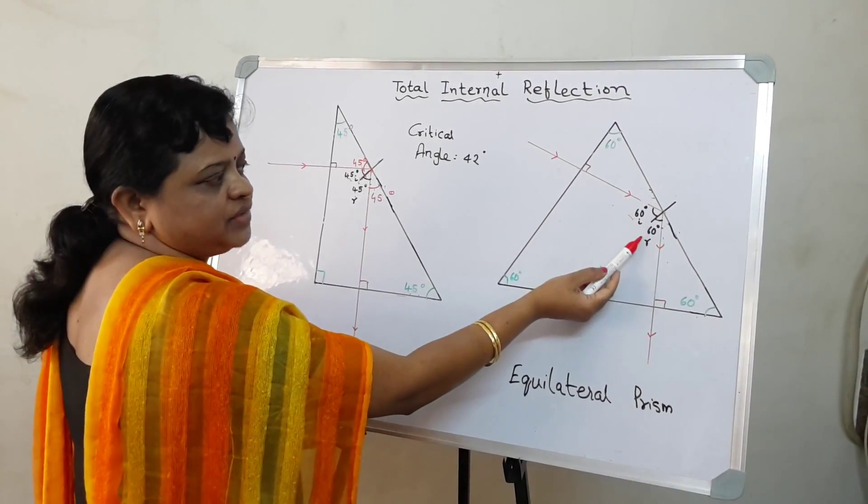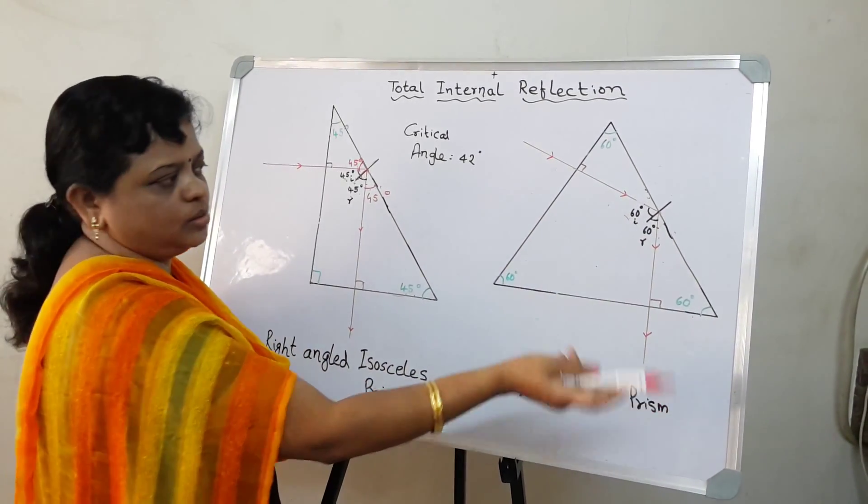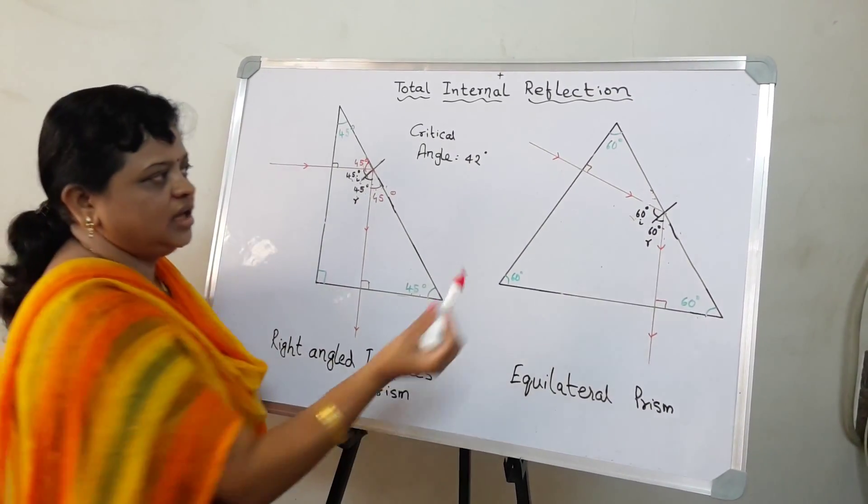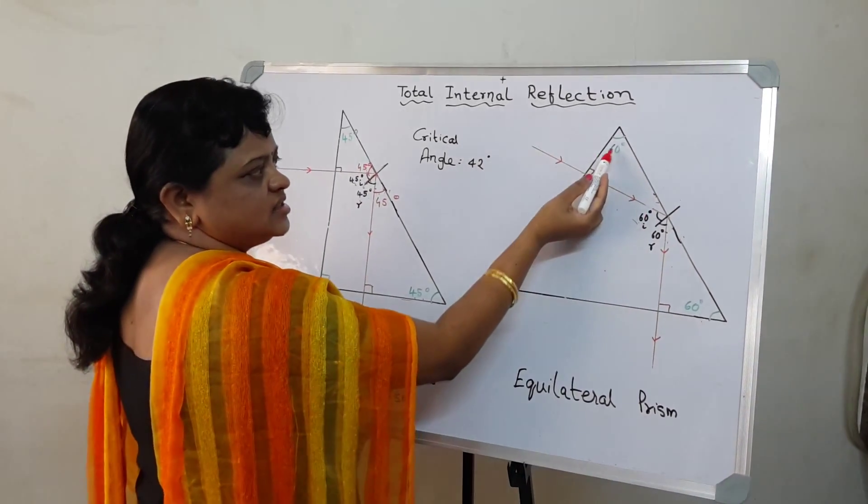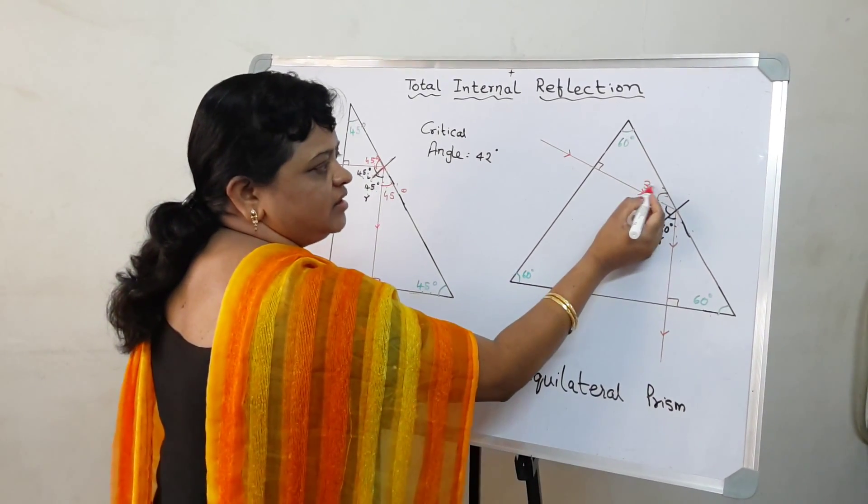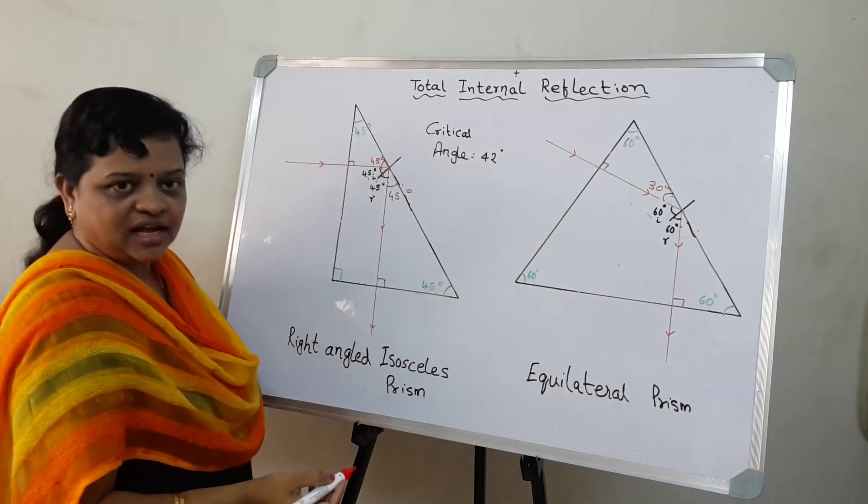60 is angle of incidence, 60 is angle of reflection. Why 60? Once again, come back to your triangles. Take this triangle here. This is 60 and this is 90 because it's along the normal. So obviously this should be 30 degrees.